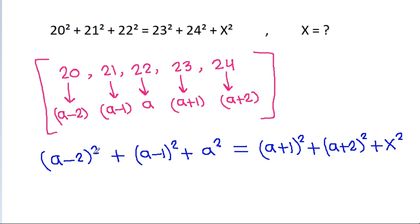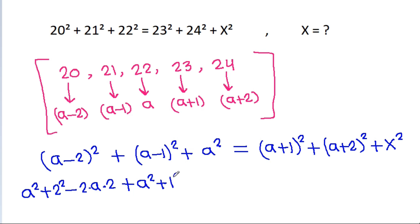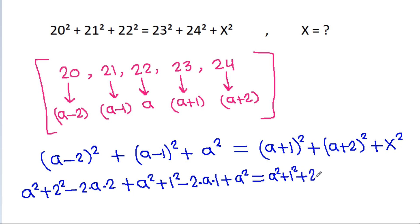And (a−2) squared will be a squared plus 4, minus 2 times a times 2. And (a−1) squared is a squared plus 1, minus 2 times a times 1. And (a+2) squared expands similarly.